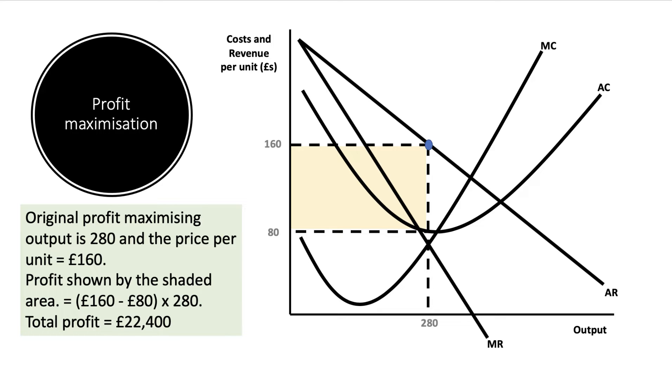If we're doubling the price effectively compared to cost, the total profit is shown by the shaded area. It's 80 pounds profit per unit times by 280, giving a total profit of 22,400 shown by the yellow area.